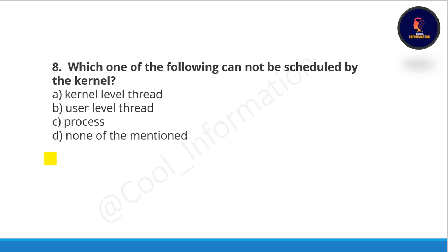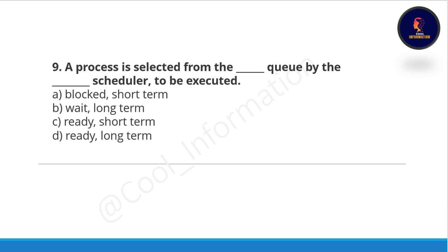Question eight: which one of the following cannot be scheduled by the kernel? Option A: kernel level thread, option B: user level thread, option C: process, option D: none of the mentioned. The correct option is option B, user level thread.